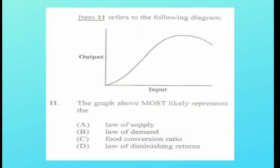Question number eleven refers to the following diagram. The graph most likely represents the a) law of supply, b) law of demand, c) food conversion ratio, d) law of diminishing returns. The answer is d) law of diminishing returns.